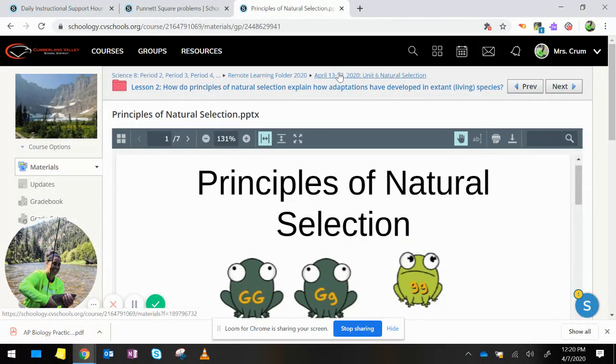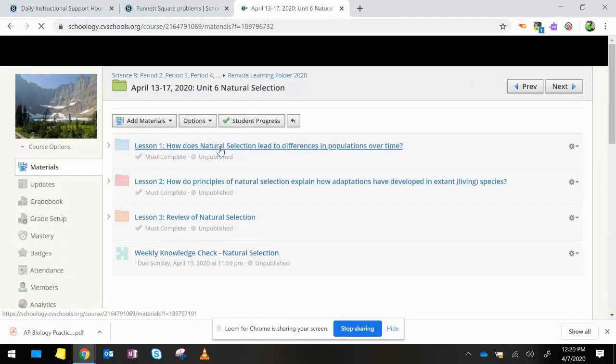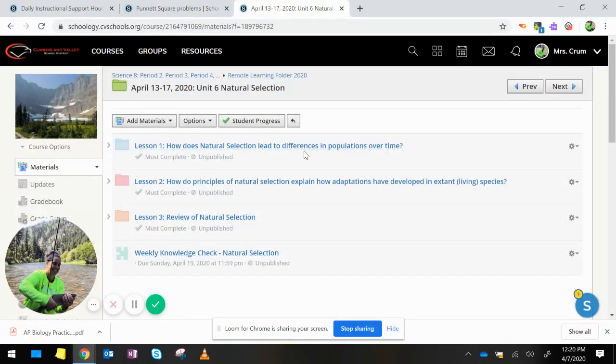So that's kind of the review of the lessons that we went over: the LEQs, how does natural selection lead to differences in population over time, and how do principles of natural selection explain how adaptations have developed in extant species. So please, if you have any questions, especially before you do the weekly knowledge check, if you have any questions on anything, please let me know.